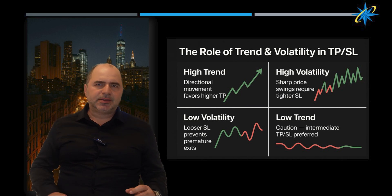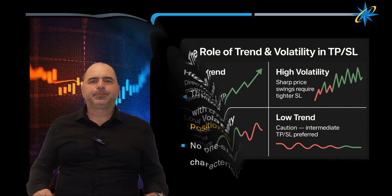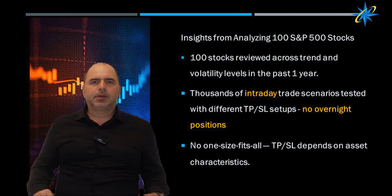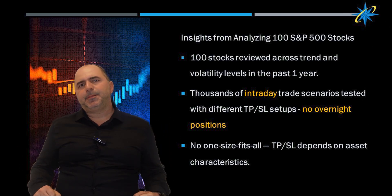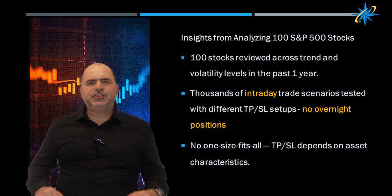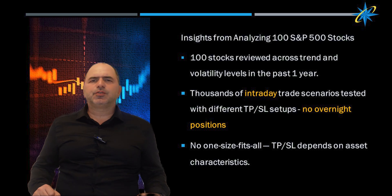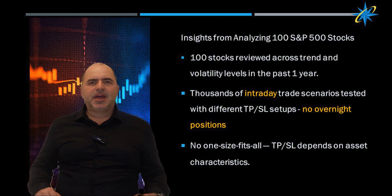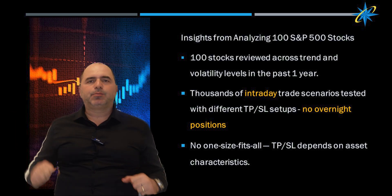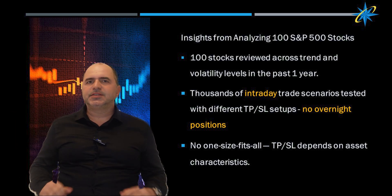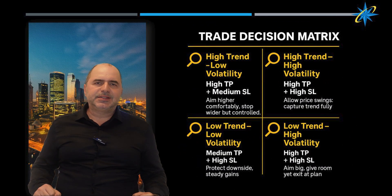Low trend — be cautious and stay somewhere in the middle. We analyzed 100 stocks from the S&P 500 over the past one year, each at different levels of trend and volatility. We simulated thousands of intraday trade outcomes with different TP and SL combinations, with no overnight positions. The result: there is no one-size-fits-all.